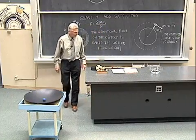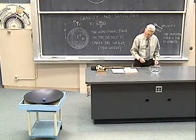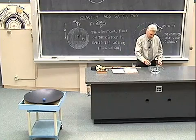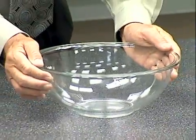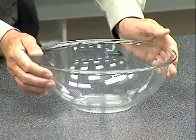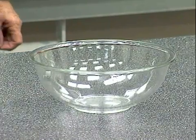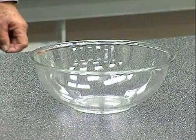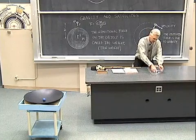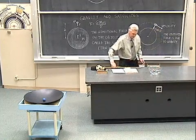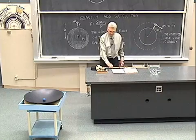I can demonstrate that here. Let me turn to this fishbowl with a marble in it, and I'll start the marble rolling around there. We see that the bowl pushes in on the marble supplying the centripetal force to keep it going, but in the case of the actual satellite, it's the force of gravity that supplies that centripetal force.